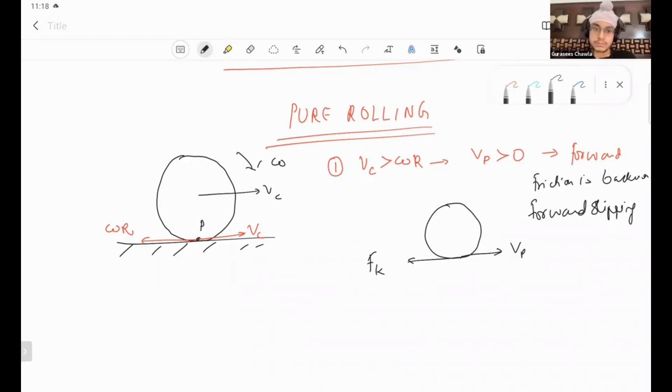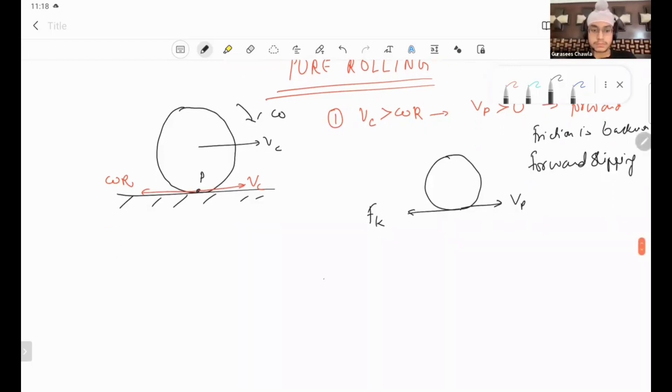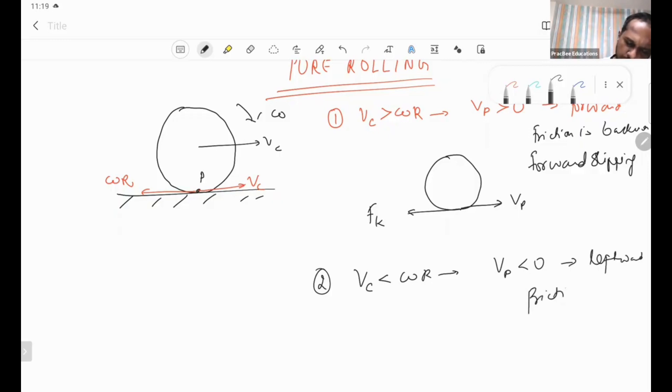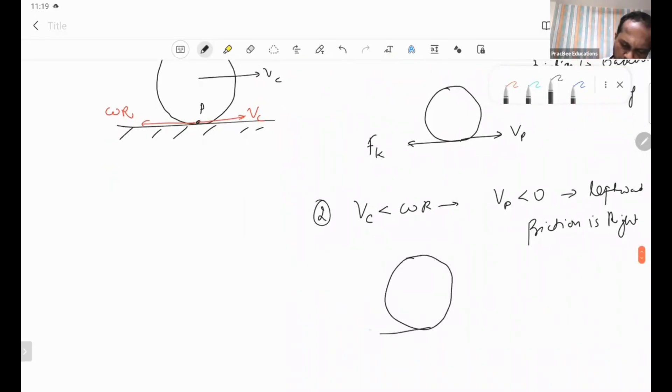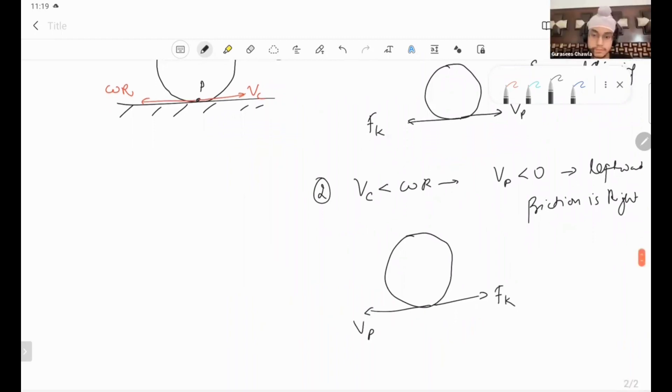But the center of mass has a momentum which is not stopped by that brake, which is the momentum of center of mass. The car will skid and the friction will be associated with skidding. With skidding, friction is in this direction and this is called backward slipping.